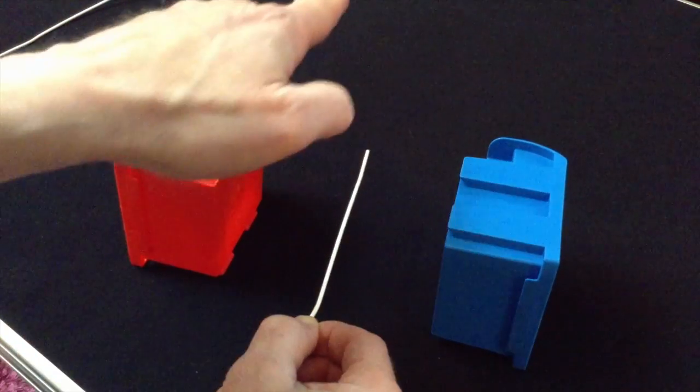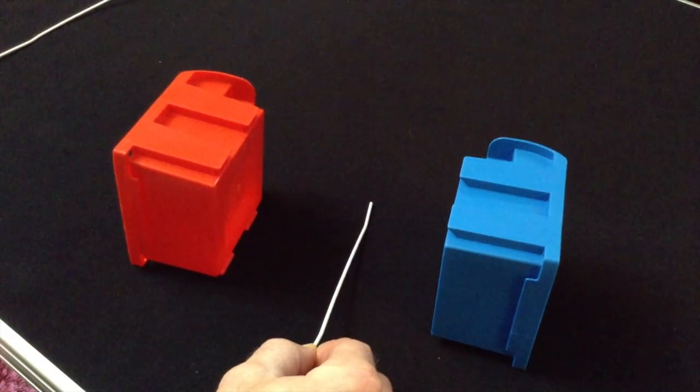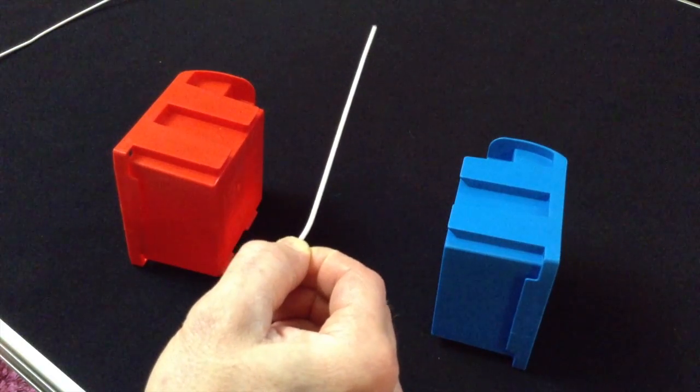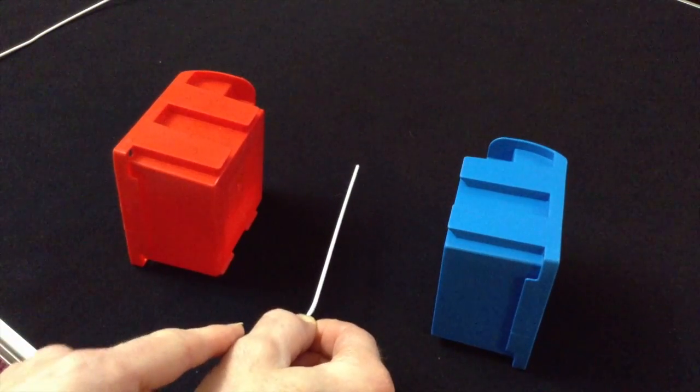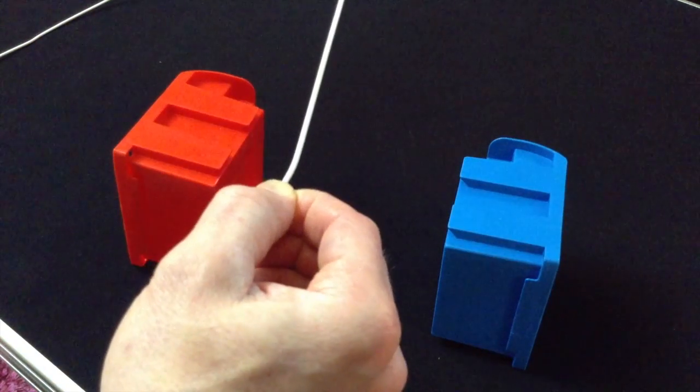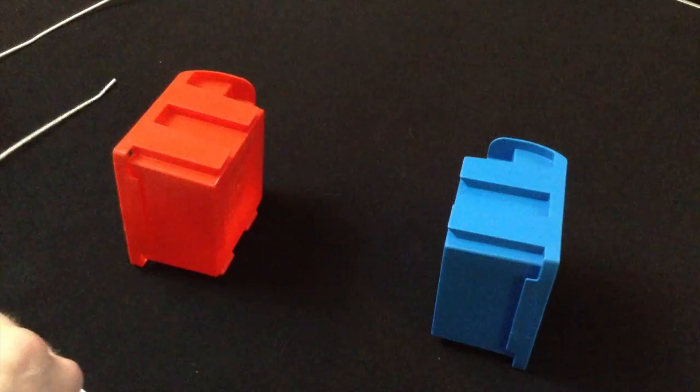So, current in one direction, it moves up. Current in the other direction, it moves down. Now, that's also true if I move it through there as well. If I move it in one direction, I get current in one direction. If I move it in the other direction, I get current in the other direction on the wire. Which is how alternators work.